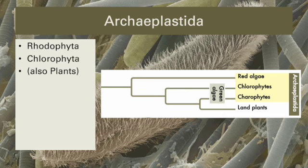Members of the Archaeplastida are photosynthetic. There are a small handful of members that have lost the ability, but even those that do not photosynthesize show evidence that they have lost this ability. There are two phyla of protists, though one of them is paraphyletic — these are the green algae.